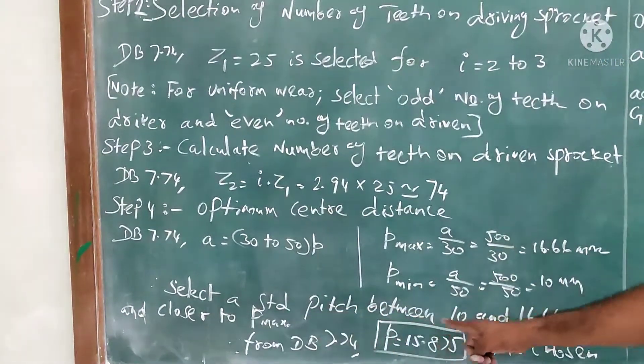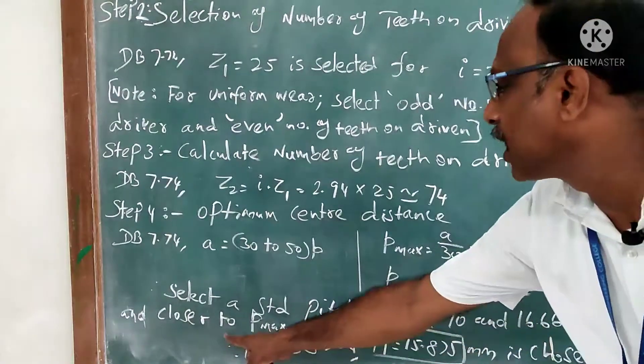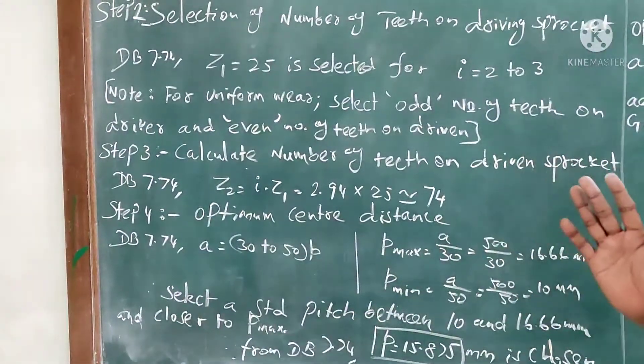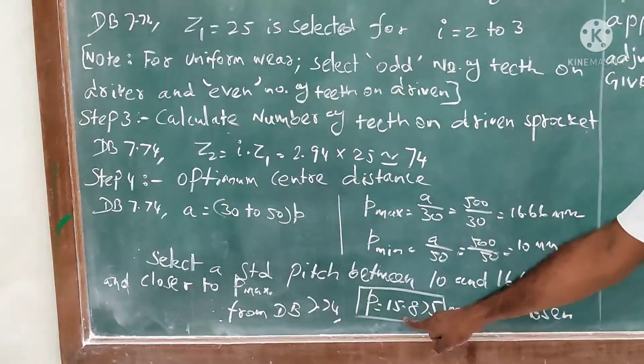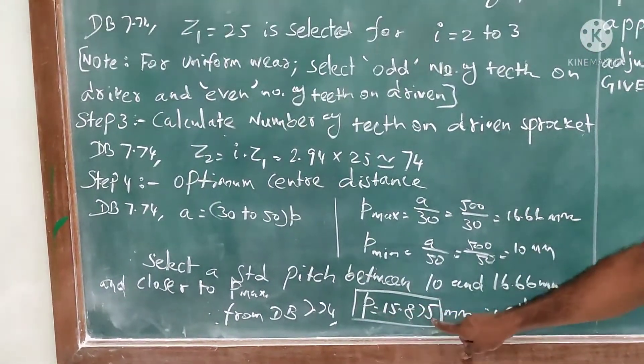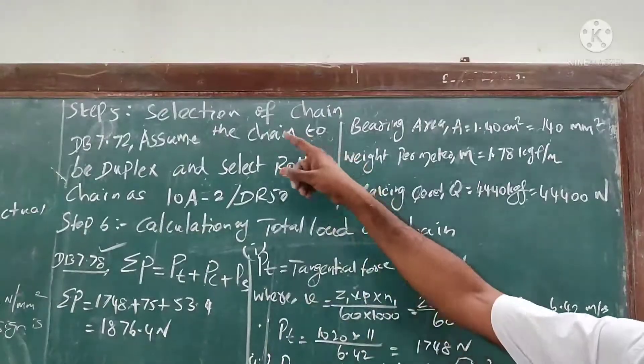Select a standard pitch between 10 and 16.6 millimeter. The closer to pmax, always closer to the pmax. From the data book 7.74, we can take in the p-values 15.87 mm for this particular application.